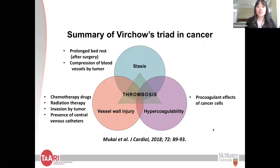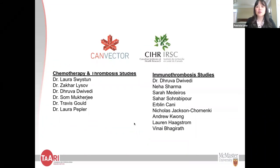In conclusion, this presentation summarized Virchow's triad in cancer patients: stasis from prolonged immobilization and tumor compression of blood vessels; anti-cancer agents — focusing on our work with chemotherapy drugs; and tumor-specific pro-coagulant molecules. I want to thank CANVector for ongoing funding support for operating budgets and trainee scholarships, CIHR, and previous and current graduate students who have worked on the chemotherapy, thrombosis, and immunothrombosis studies.